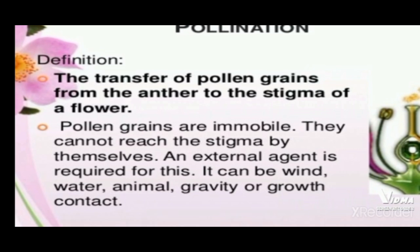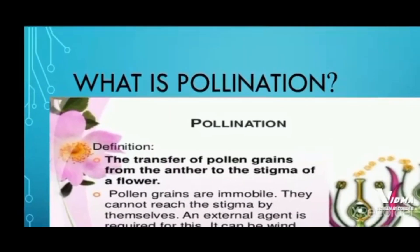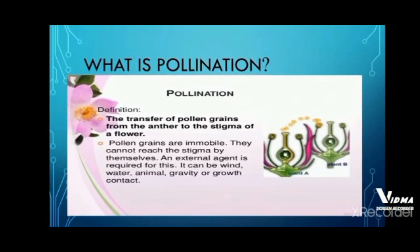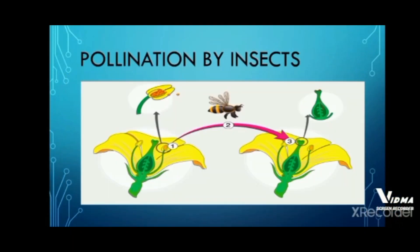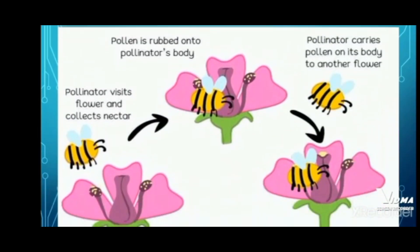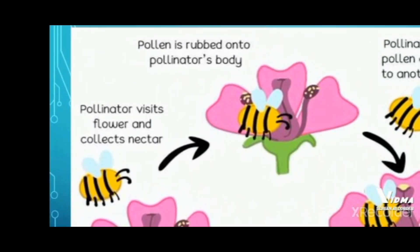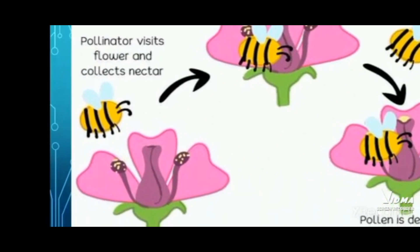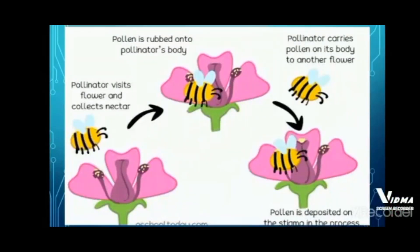First we will see how pollination takes place by insects. The insect sits on one flower and transfers to another flower — the pollen sticks to its body and is transferred to another flower. As you will see in detail, the insect sits on the flower. The pollen are sticky so they easily attach to the body of the insect, and when it sits on the stigma of another flower, the pollen is transferred to that flower.